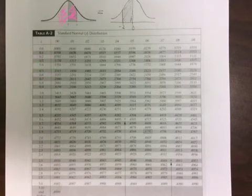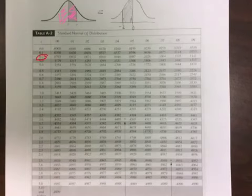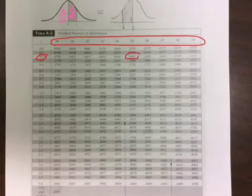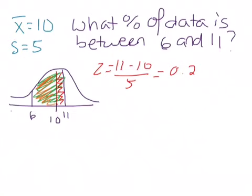Looking up 0.2 in the z-table — if it were 0.25 or 0.26 you'd use those columns — for 0.2 with no additional decimal places, the value is 0.0793. So from the z-table, the area between the mean and 11 is 0.0793.